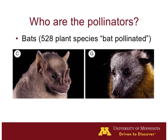The first group I'm going to talk about are bats. There are about 528 different plant species that are in fact pollinated by bats. Most of these bats, and the plants they pollinate, are found in the Neotropics — basically Central and South America. There is one group of bats known as the flying foxes, found in Australia and Asia, that are also known to pollinate plants.